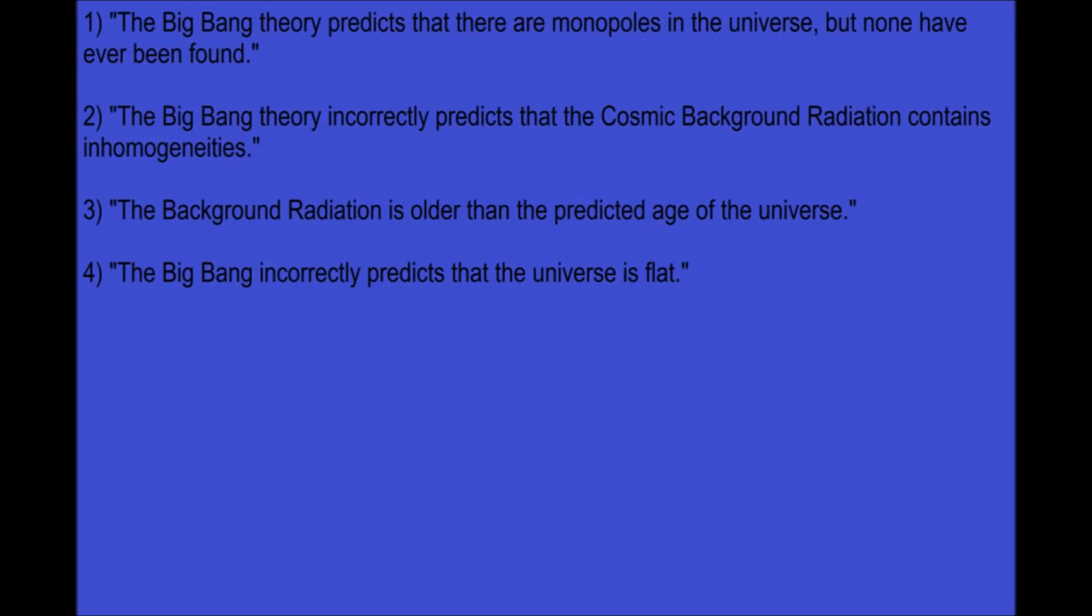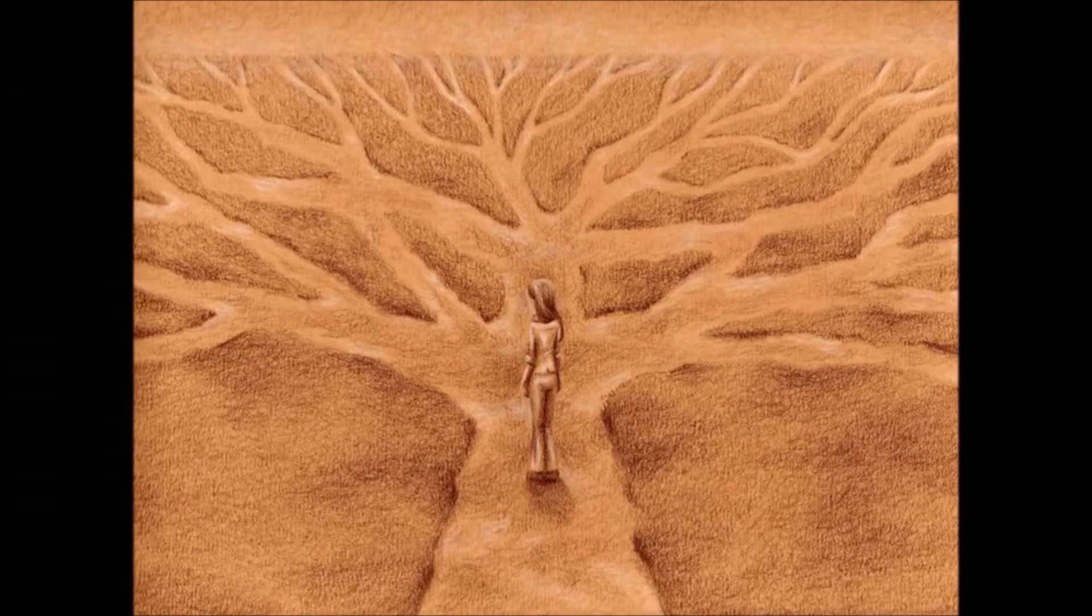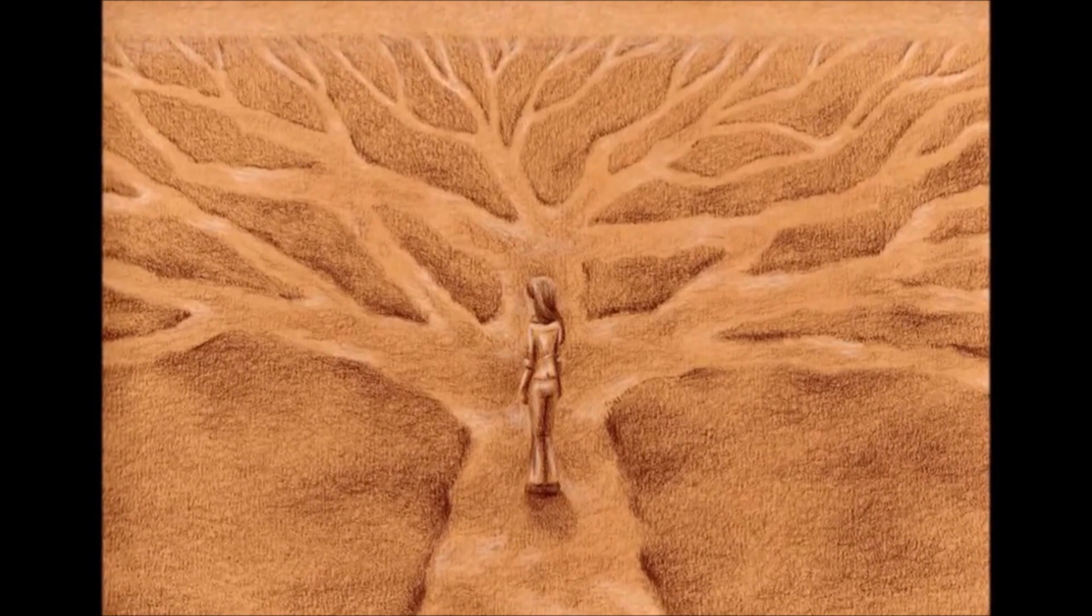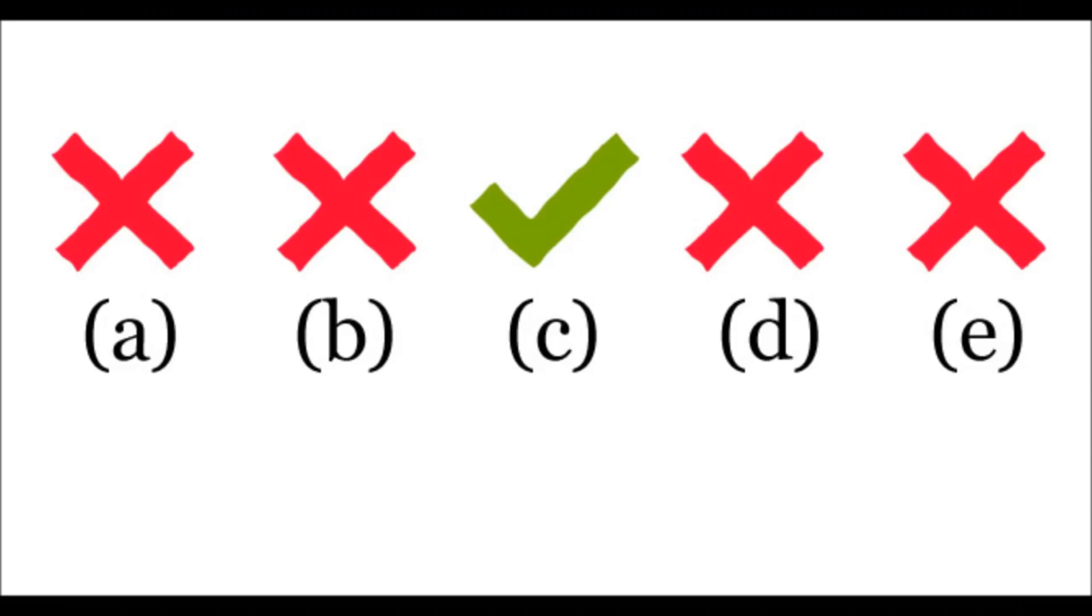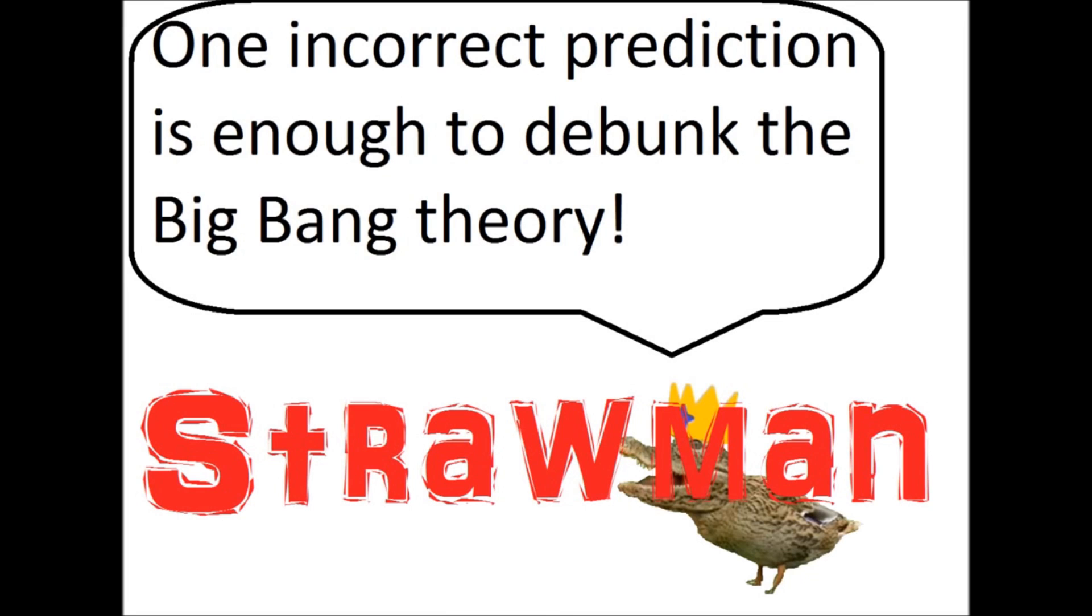Four. You claim that the Big Bang incorrectly predicts that the universe is flat. No, AQ. That prediction was correct. It is here that I should point out that the Big Bang actually predicted three possible geometries, not just one. Science advances by deriving multiple models to account for a particular phenomenon, and eliminates inaccurate models as time goes on and data is accumulated. The example of the universe's geometry is a perfect example of this, AQ.